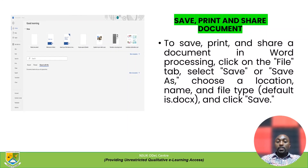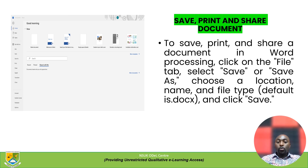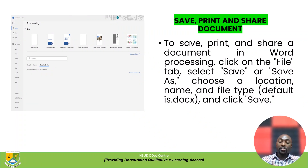To save a document in word processing, click on the File tab, select Save or Save As, and then choose a location, file name, and file type. The default file format is .docx. Then click Save to save the file.